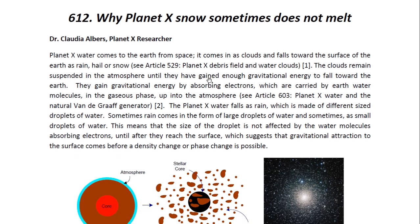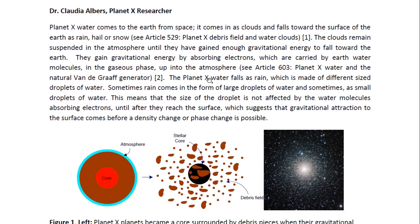The Planet X water falls as rain, which is made of different sized droplets of water. Sometimes rain comes in the form of large droplets and sometimes small droplets. This means that the size of the droplet is not affected by the water molecules absorbing electrons until after they reach the surface, which suggests that gravitational attraction to the surface comes before density change or phase change is possible.